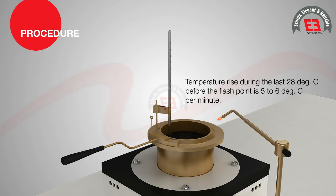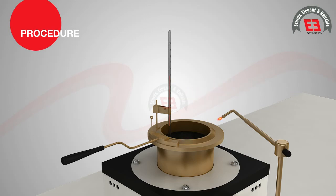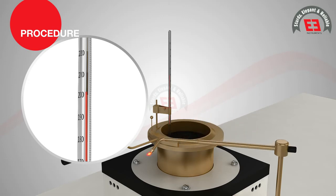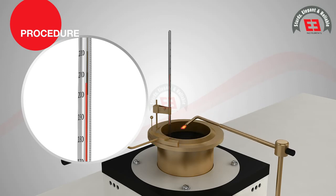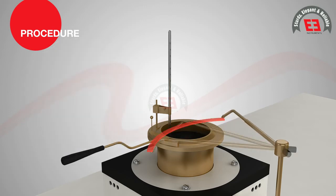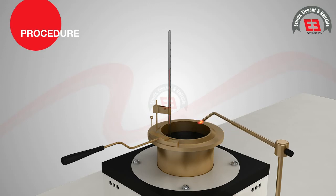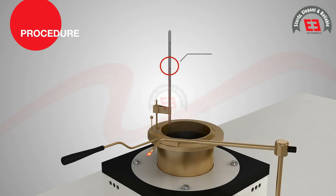Apply the test flame when the temperature of the test specimen is approximately 28 degrees Celsius below the expected flash point. Thereafter, at every rise of 2 degrees Celsius, pass the test flame across the center of the test cup at right angle to the diameter which passes through the thermometer. The test flame is moved in a horizontal plane having an arc of at least 150 mm and not more than 2 mm above the upper edge. The flash point is taken as the temperature read on the thermometer when a flash first appears at any point on the surface of the sample.